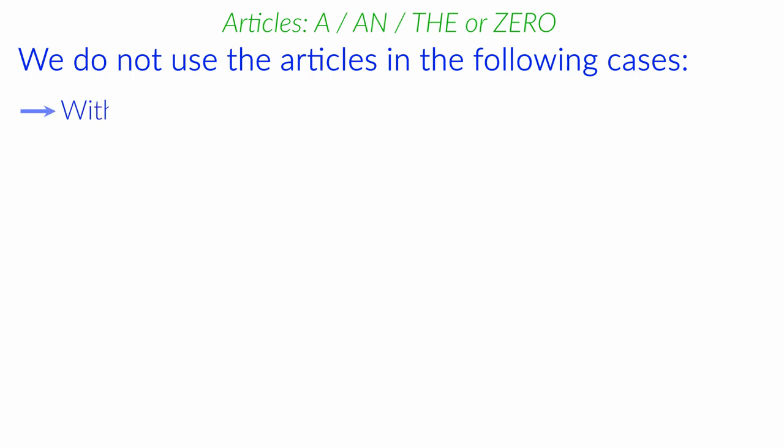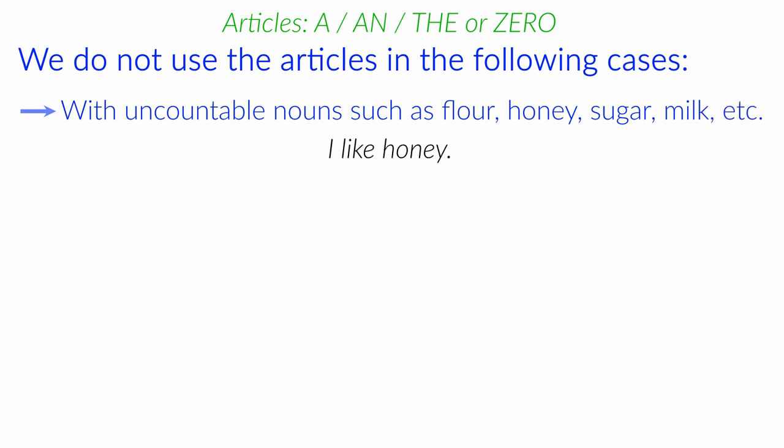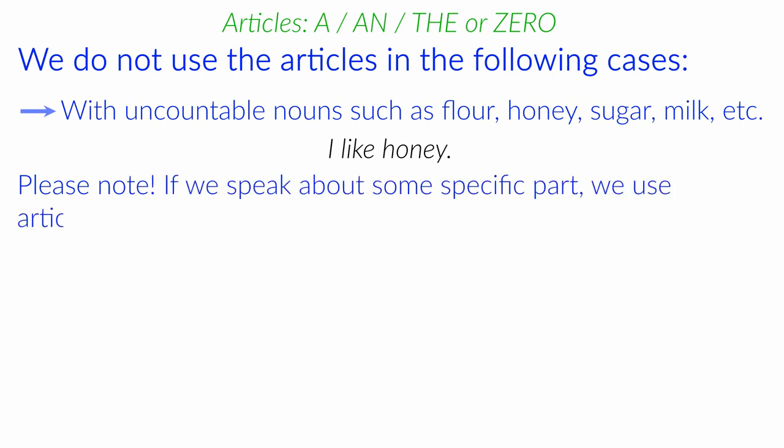With uncountable nouns such as flour, honey, sugar, milk, etc. For example, I like honey. Please note, if we speak about some specific part, we use article the. For example, the milk is very cold for the baby.